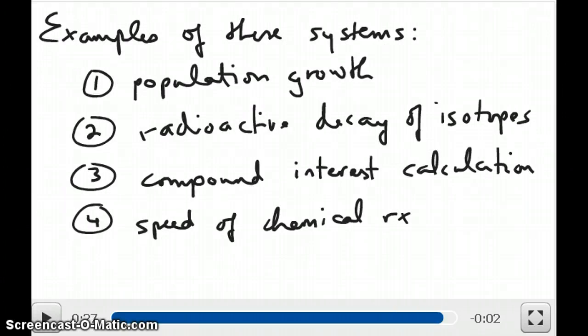What are some examples of systems that display continuous growth rates or even decay rates? Population growth is a good example of this, whether it's population of human, population of bacteria, population of animals. Radioactive decay of isotopes is another good example of this, and we would discuss some part of this in CHEM 12. Compound interest calculation is another example of a system that displays growth rates continuously. And then speed of chemical reaction is another thing that we would discuss in CHEM 12.